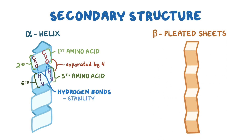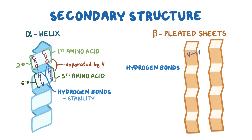Beta pleated sheets also rely on hydrogen bonding, but slightly differently. Imagine a neatly folded piece of paper. In beta pleated sheets, hydrogen bonds form between the NH on one flap of paper and the CO on another flap of paper, and these bonds almost hold or glue the sheets together, making beta pleated sheets really stable as well.